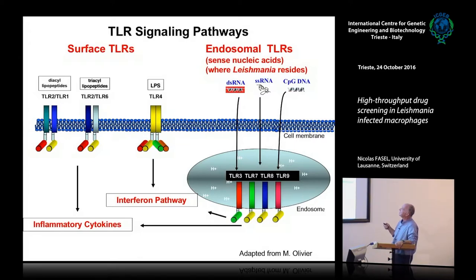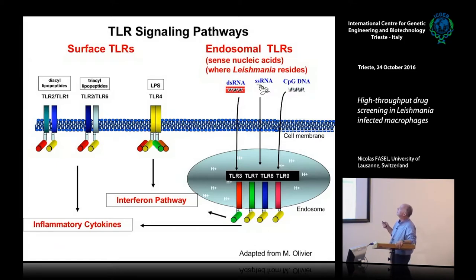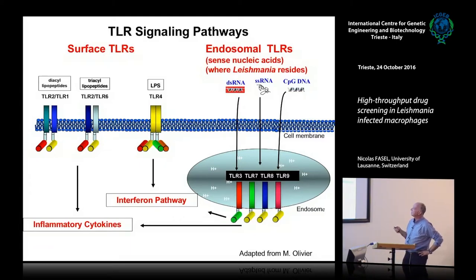Among the different nucleic acids, you have different TLRs. Double-stranded RNA is specifically recognized by TLR3, whereas single-stranded RNA is recognized by TLR7 and TLR8. CpG, which is often used as an adjuvant in vaccines, is recognized by TLR9. Through specific adapter molecules, you also have production of type 1 interferon and inflammatory cytokines.